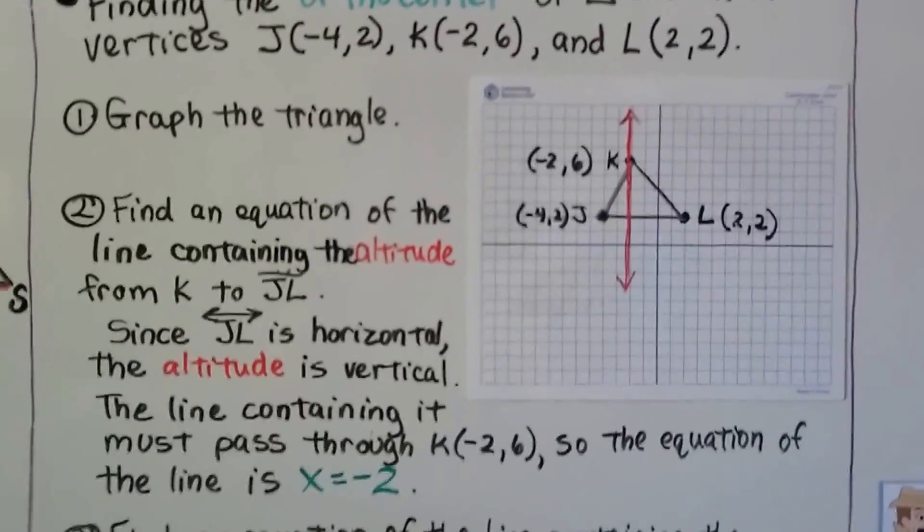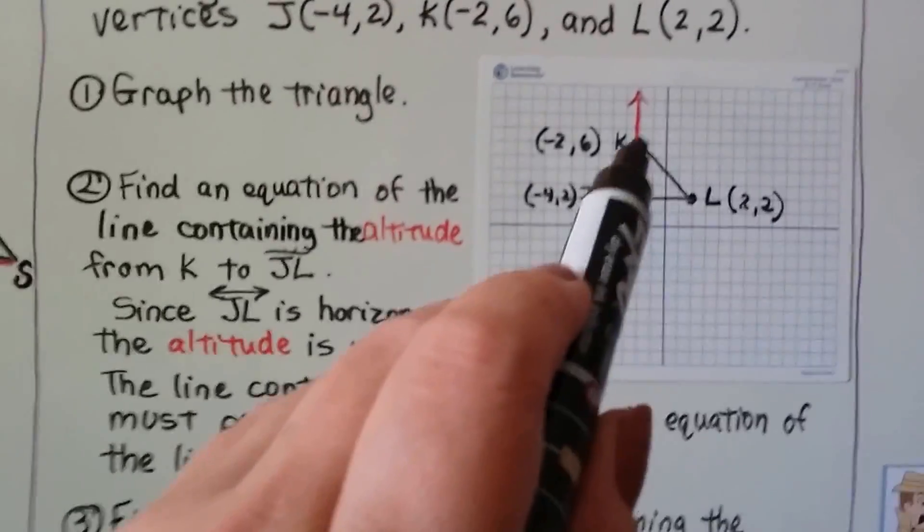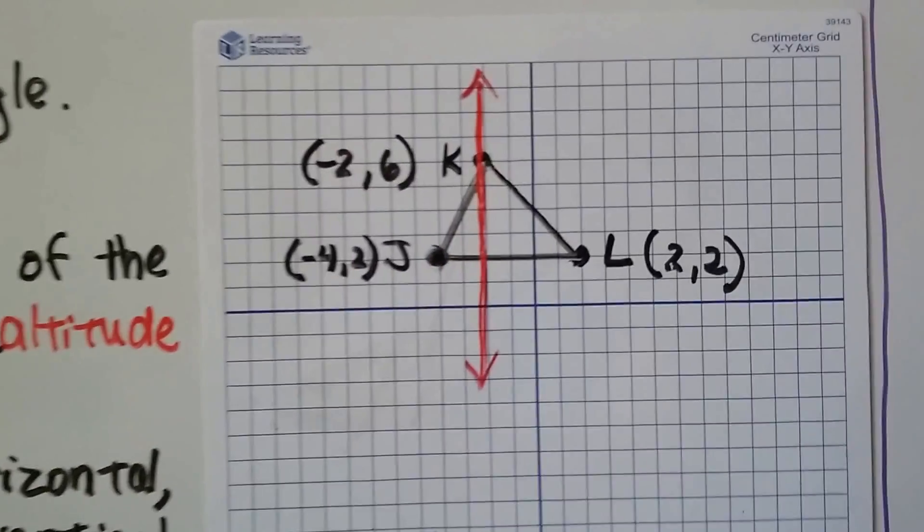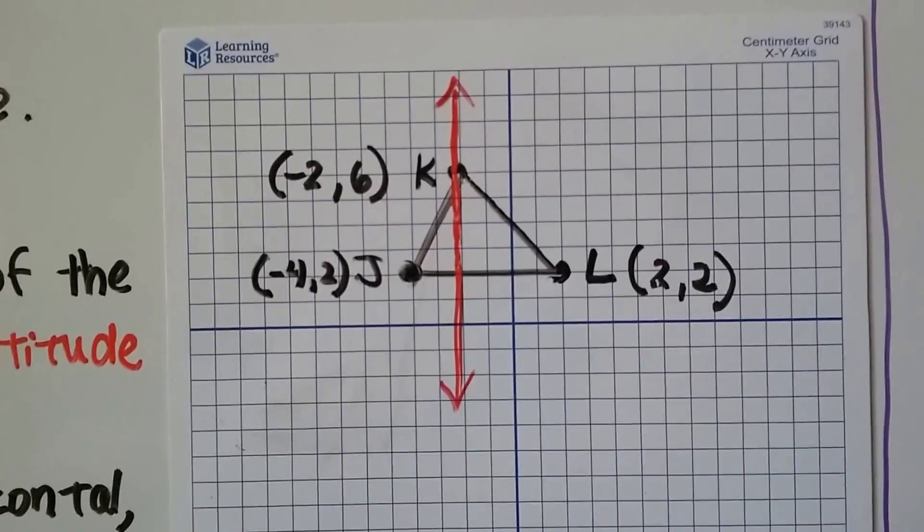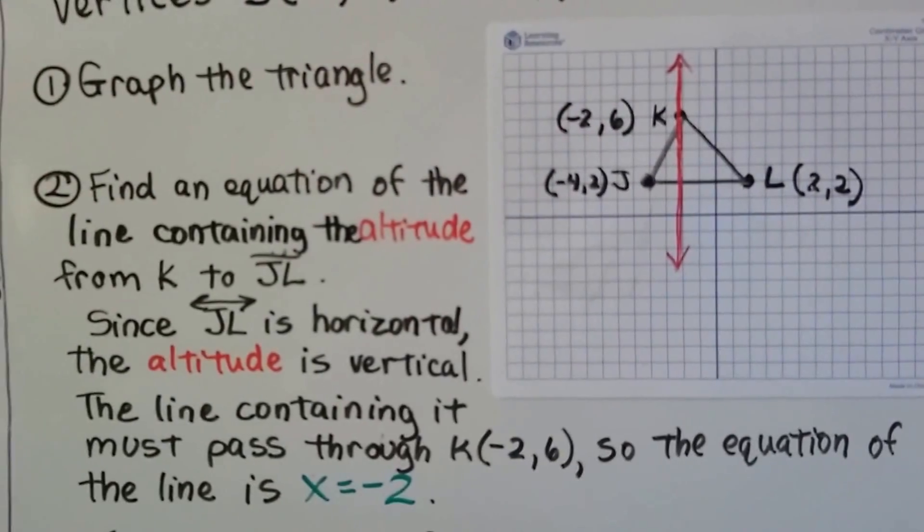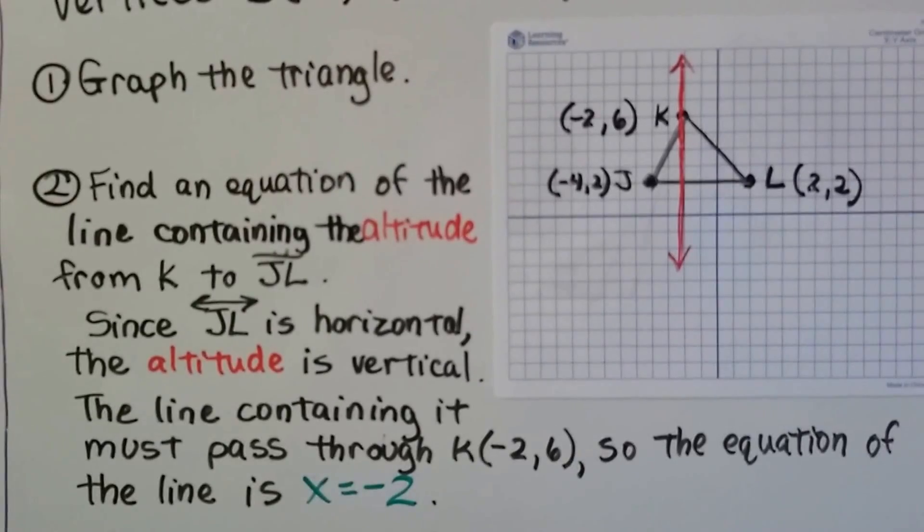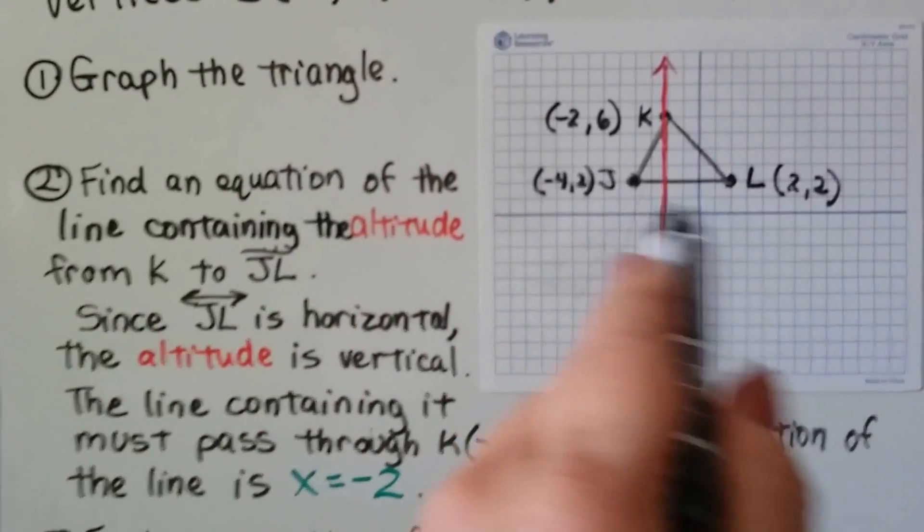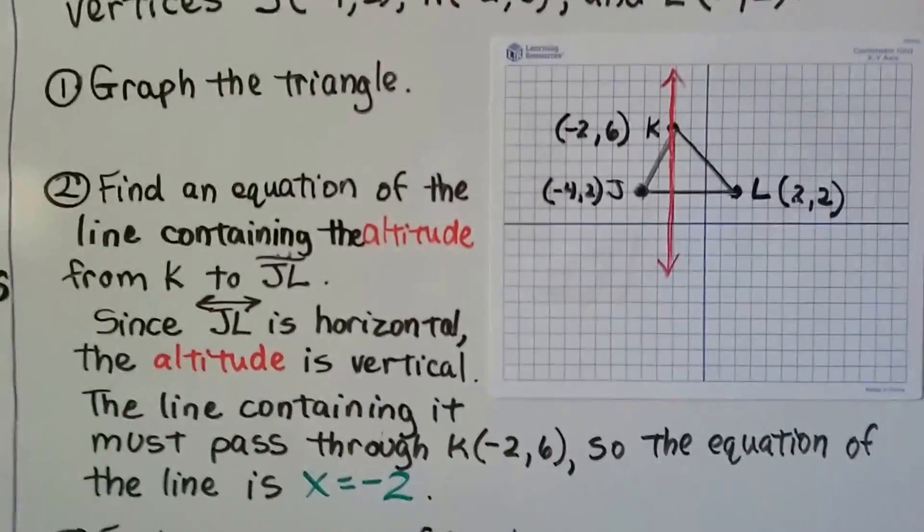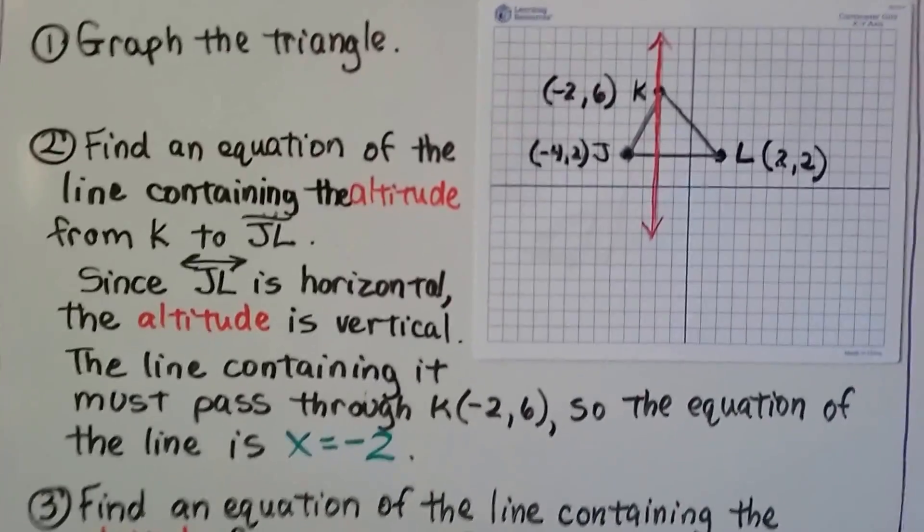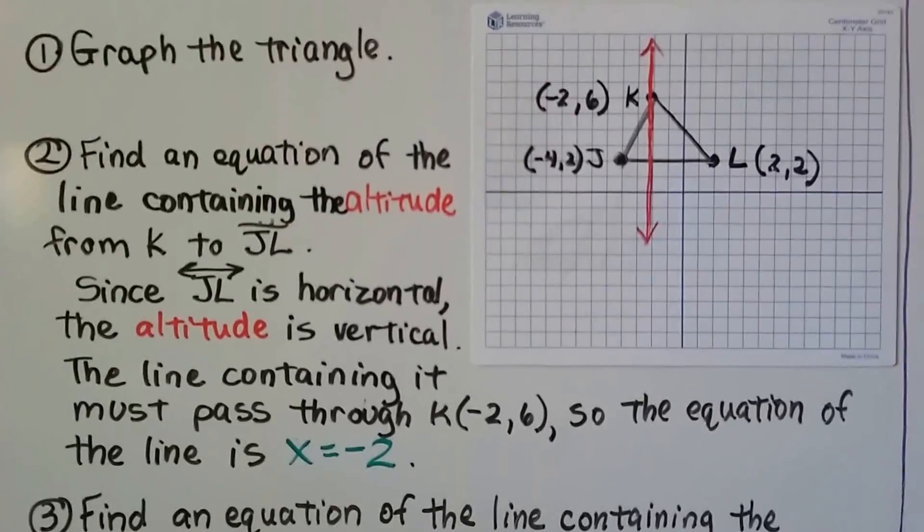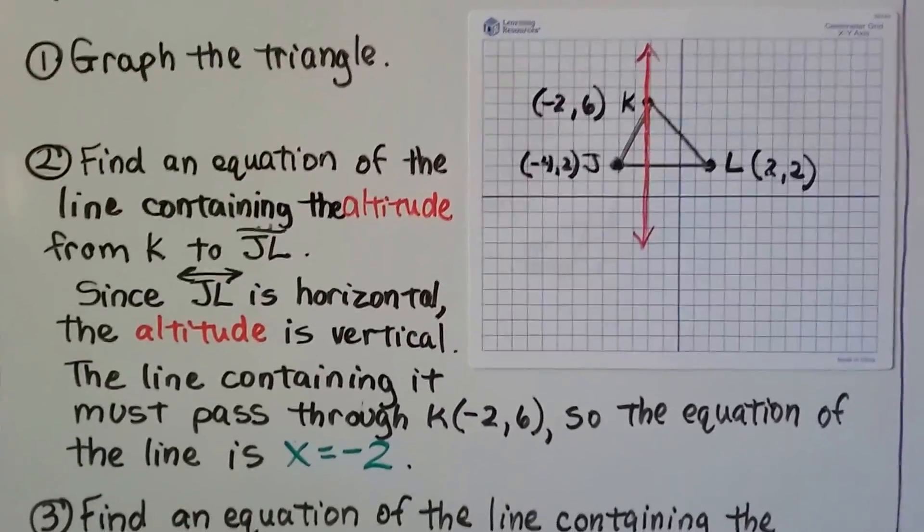We find an equation of the line containing the altitude from K to JL. So we're going to go from K at the top and make it perpendicular to JL. So we have that red line. So that's the altitude. Since line JL is horizontal, right here, the altitude will be vertical because it has to be perpendicular. And the line containing it must pass through K at negative 2, 6, right here. So the equation of the line is x equals negative 2, because all of the x values are negative 2. It's vertical.